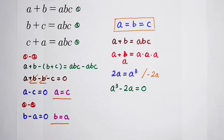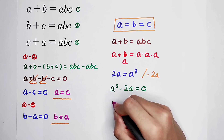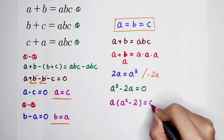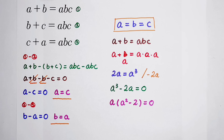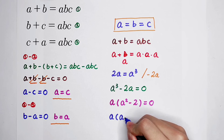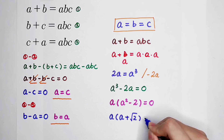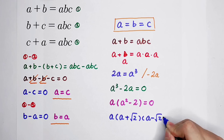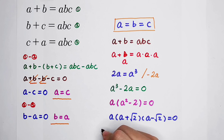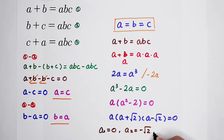Now we factor. Taking an A out gives A times the quantity A squared minus 2, equals 0. The factor A squared minus 2 can be further factored. This equation has three roots: A₁ is 0, A₂ is negative square root of 2, and A₃ is square root of 2.